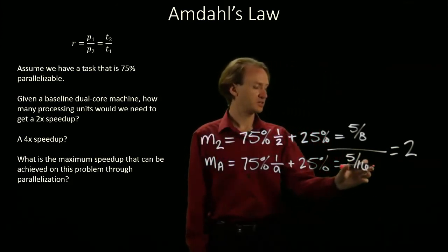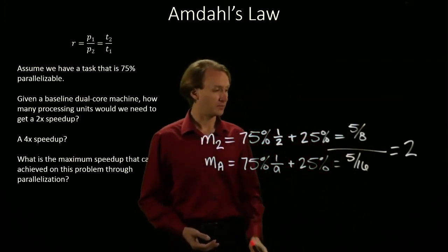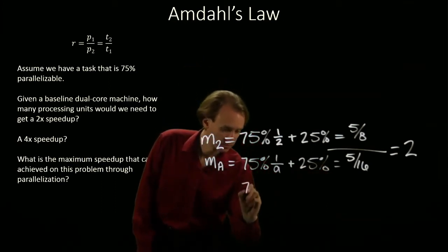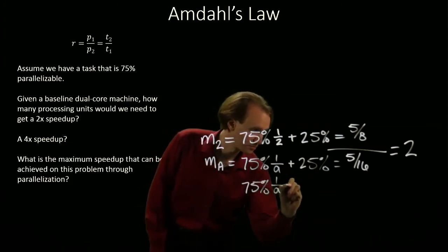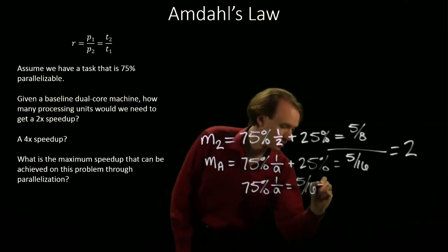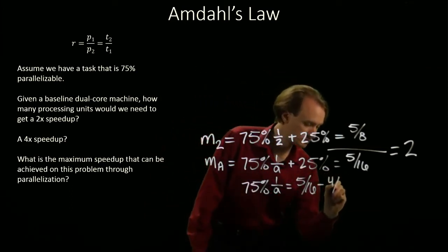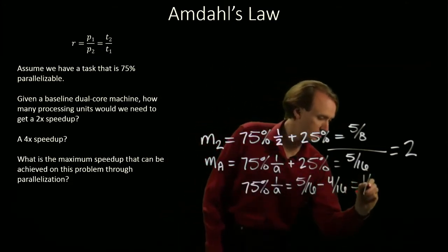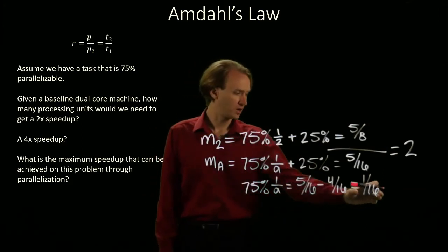That will give me 5 sixteenths. So, 5 sixteenths is half as much time as 5 eighths is. So, now I need to solve for A. So, I'll start by subtracting the 25%. So, 1 fourth or 4 sixteenths leaves me with 1 sixteenth.